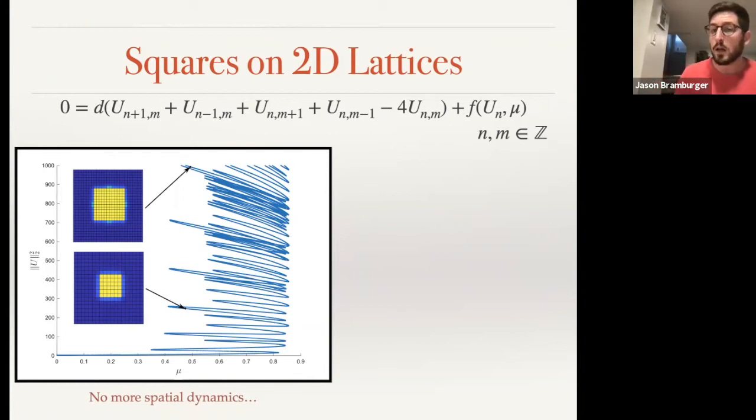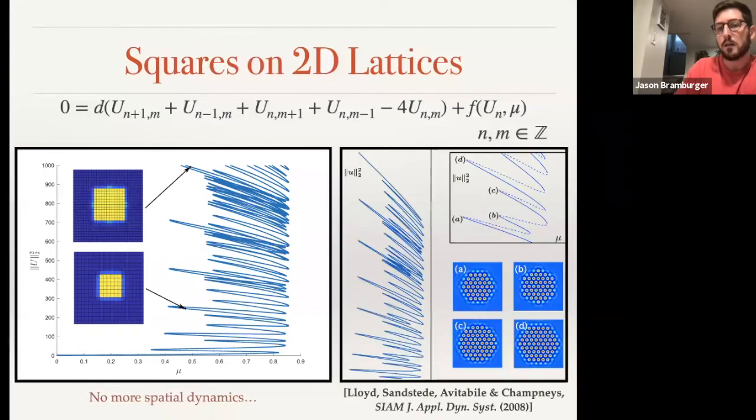But you can still find localized structures nonetheless, and in this case we were interested in these localized square patterns. And you can see the resulting bifurcation diagram that they trace out shown on the board here. So the first thing that we notice is it looks almost nothing like the regular pattern or the regular curves I showed you on the previous slide. These are very disorganized, they're very complicated, and in fact they're quite unpredictable. But there is something exciting about this, and what really excited us when we looked at this was how much they look like the bifurcation curves that have been traced out by localized hexagon patches in the Swift-Hohenberg equation.